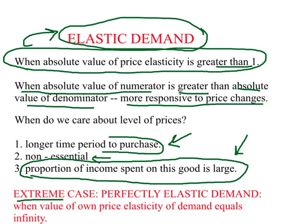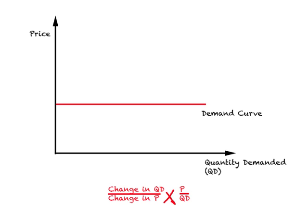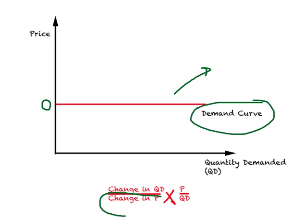Elastic demand, and in an extreme case, this is called perfectly elastic demand. Here the value of own price elasticity of demand equals infinity. In this diagram, I have drawn a horizontal demand curve, which reflects the case of perfectly elastic demand. You get infinity when you divide something by zero. On this horizontal line, there is no change in price — change in price equals zero — so when you divide the expression by zero, you get infinity. This is the case of perfectly elastic demand.